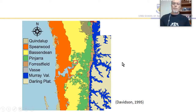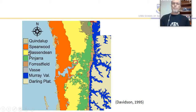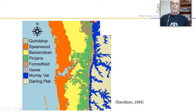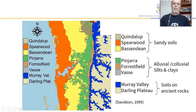To put everything in context, we're sitting on the Swan coastal plain. The area where Ashfield Flats is occupies a couple of different geomorphic units: the Bassendine dune system, shown in yellow on the map, and the Pinjarra, which is an alluvial recently deposited material shown in green. The soils that develop on these units — the westernmost dunes — are Quindalup, Spearwood in orange, and Bassendine in yellow. The sandy materials give rise to sandy soils.